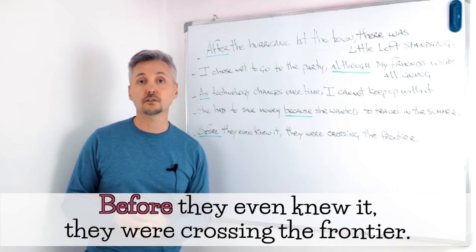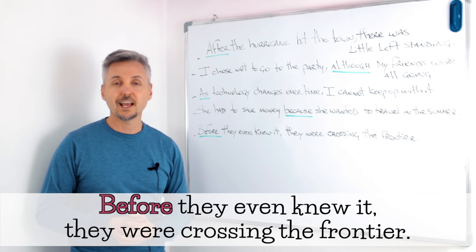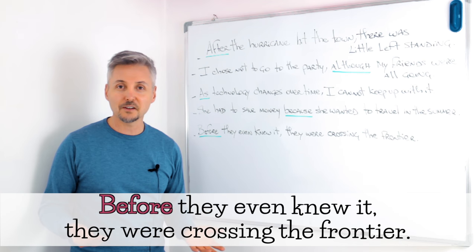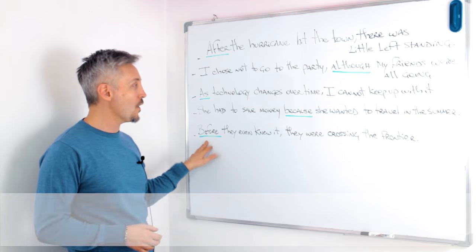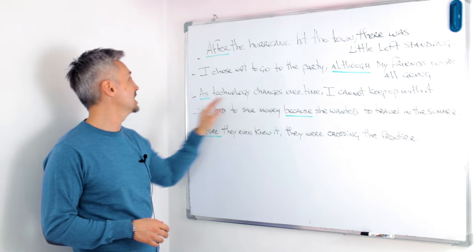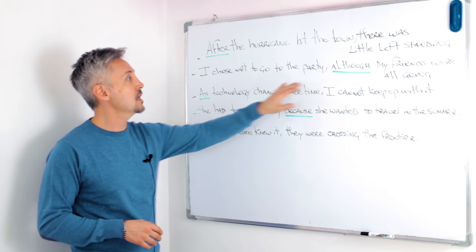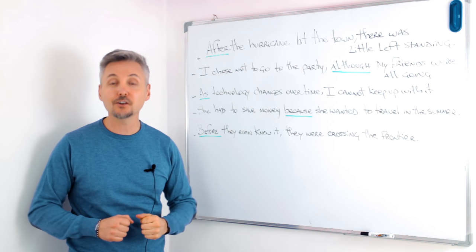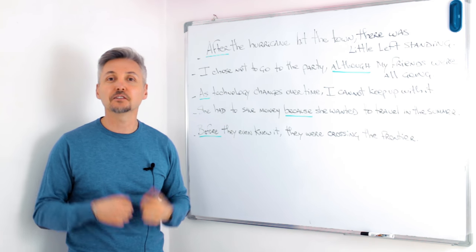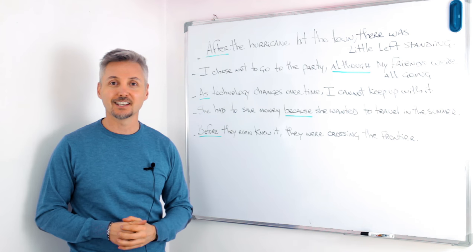Before they even knew it, they were crossing the frontier. In this lesson, we're going to talk about before, because, as, although, and after — subordinating conjunctions. So stay tuned.